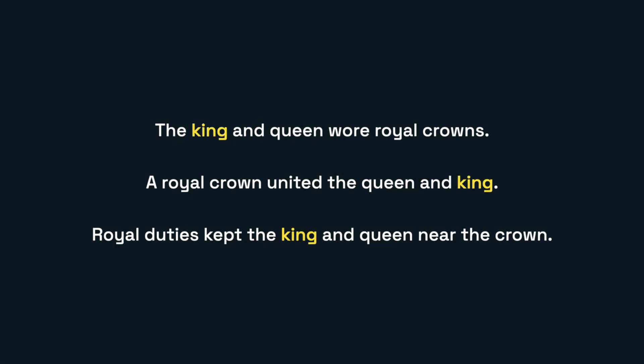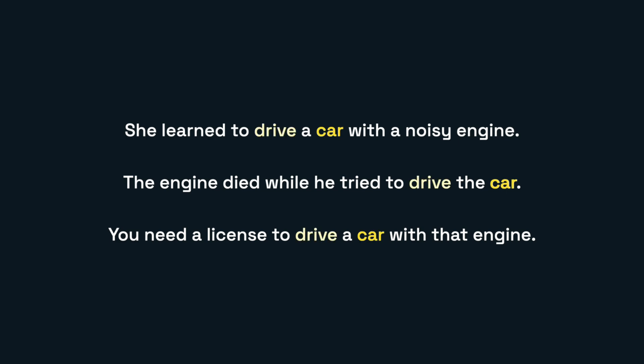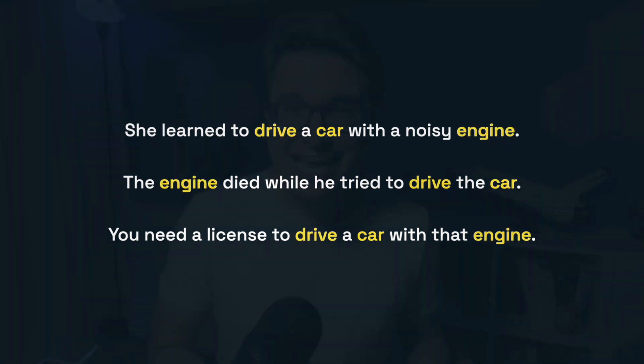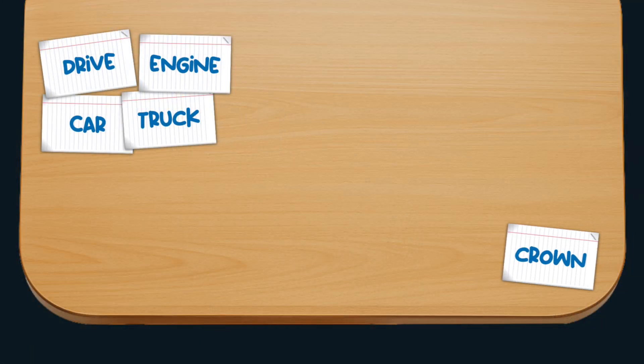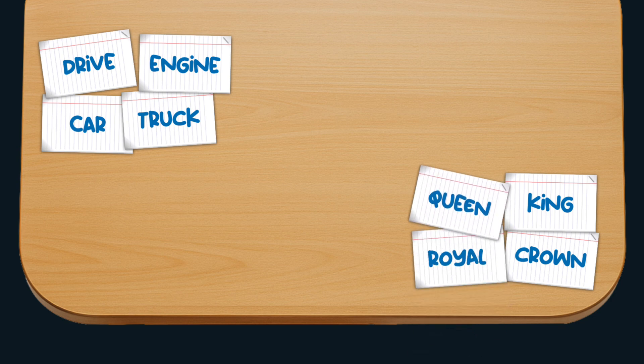But what researchers from Google understood and wrote about back in 2013 was that you don't need to know the exact meaning of words to understand if they're related to each other. You just need to look at the words around them and calculate what's the probability of those words appearing together. For example, if you see the word "king" often appearing near words like "queen," "crown," and "royal," and the word "car" showing up next to "drive" and "engine," you can guess that king and queen are related, and so are car and truck, even if you don't know the actual meaning of these words. Then all you need to do is place the related words close to each other in a shared space so that their connections can be reflected by how near they are to each other.